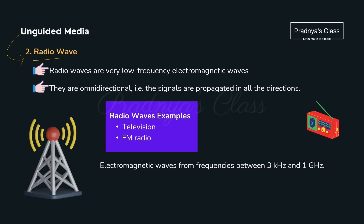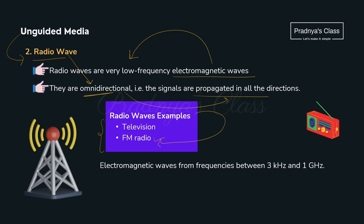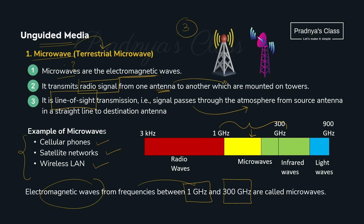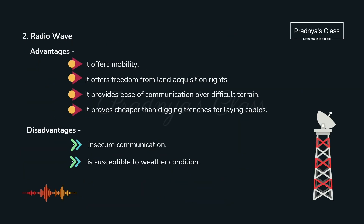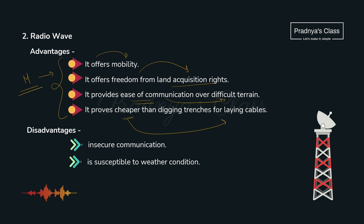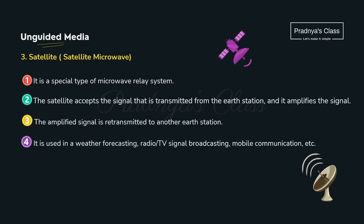The second unguided medium is radio waves — also electromagnetic waves but with low frequency, ranging from 3 KHz to 1 GHz. They are omnidirectional, meaning they can propagate in all directions. Examples include FM radio and television. Advantages: similar to microwaves — offers mobility, freedom from land acquisition rights, ease of communication over difficult terrain, and is cheaper as no cables need to be laid. Disadvantages: insecure communication and susceptible to weather conditions.